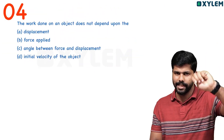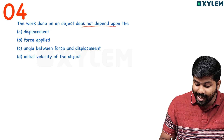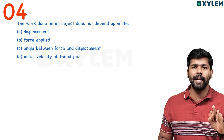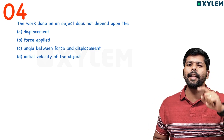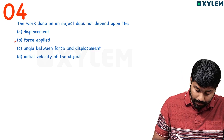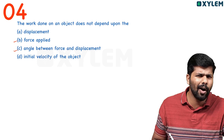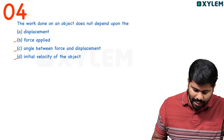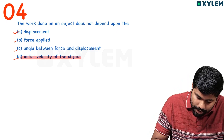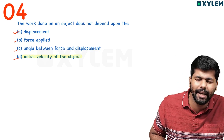Fourth question: The work done on an object does not depend on which of the following? Work depends on force, displacement, and the angle between force and displacement. It does not depend on the initial velocity of the object. Whether the object starts from rest or is already moving, the work done for the same displacement remains the same. Initial velocity is not a factor.